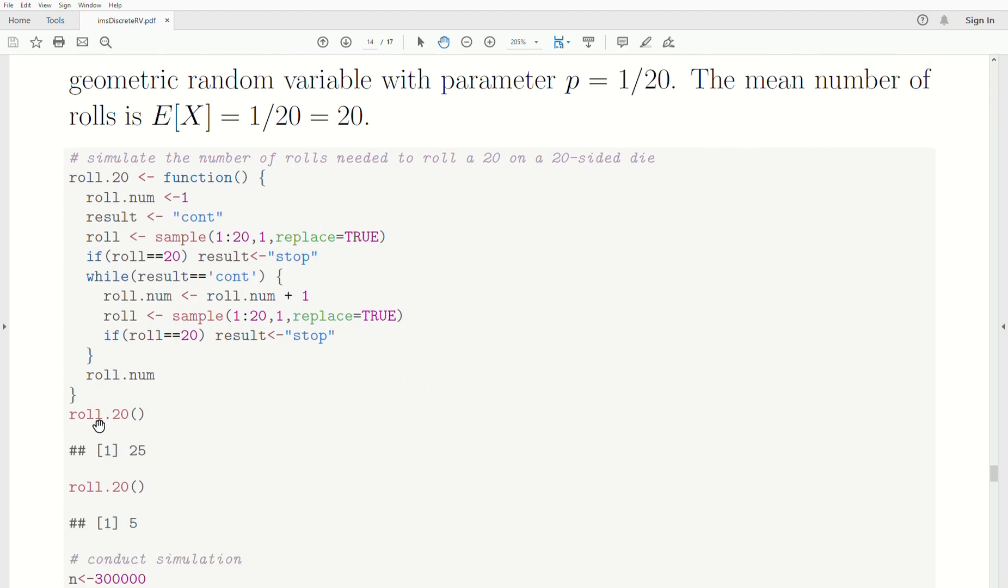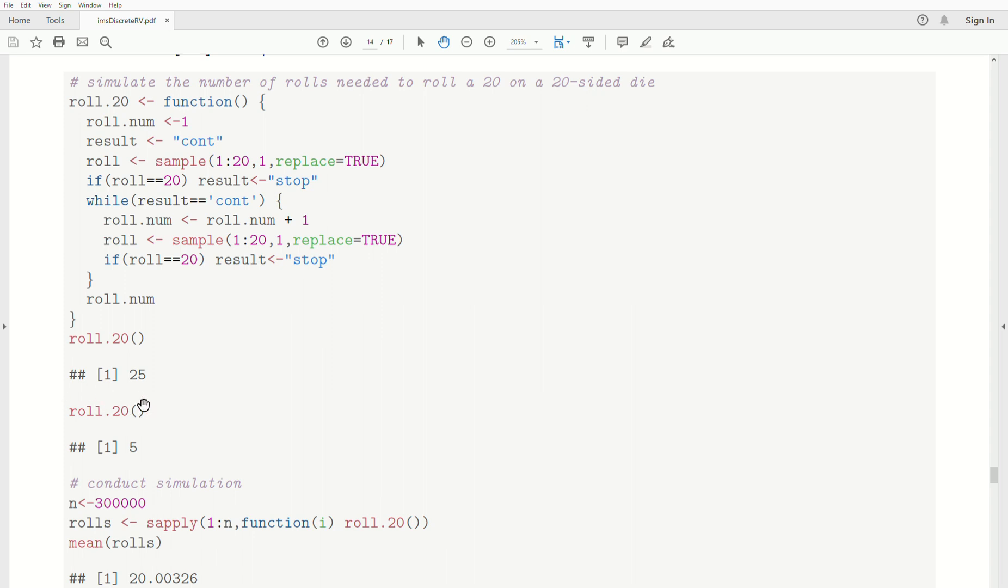So if we run the function roll.20, the first example, it took 25 times to roll a 20. The second time we ran this simulation, it took five times to roll a 20.